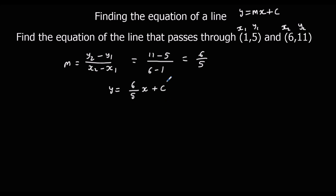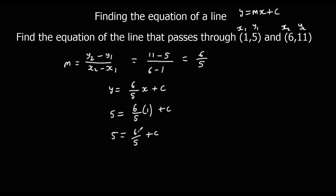So now I need to find out what c is — find out what the y-intercept is. I'm going to substitute in one of these pairs of numbers, so I'll use (1, 5): y is 5, x is 1. So 5 equals 6 fifths times 1 plus c, which gives 5 equals 6 fifths plus c. If you don't like fractions, the easiest way is to multiply through by 5 — so every term gets multiplied by 5. 5 times 5 is 25; 6 fifths times 5 just gets rid of the 5, so it becomes 6; and c times 5 makes it 5c.